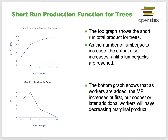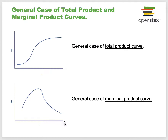The short-run production function for trees: the top graph shows the short-run total product—as lumberjacks increase, output also increases until five lumberjacks are reached, then it starts to flatten out or decline. The bottom graph shows marginal product: as workers are added, marginal product increases at first, but sooner or later additional workers have a decreasing marginal product. In the general case, the total product curve and marginal product curve max out at some point.